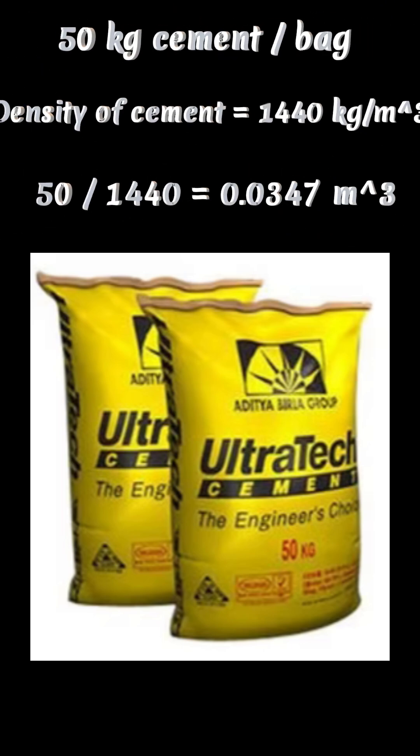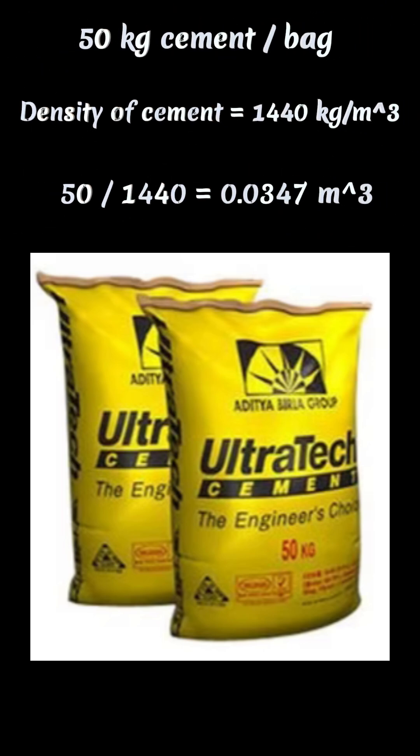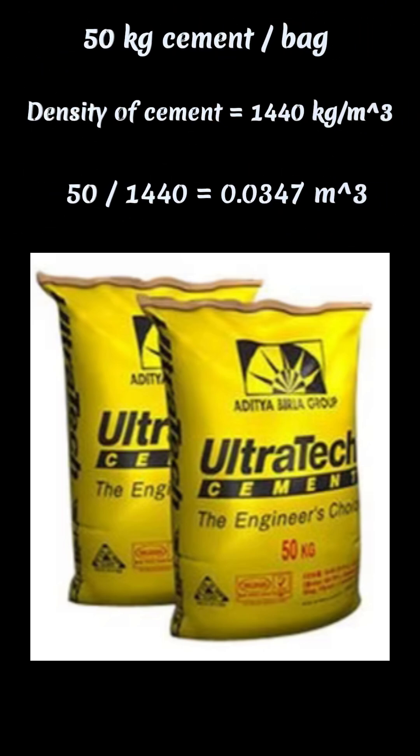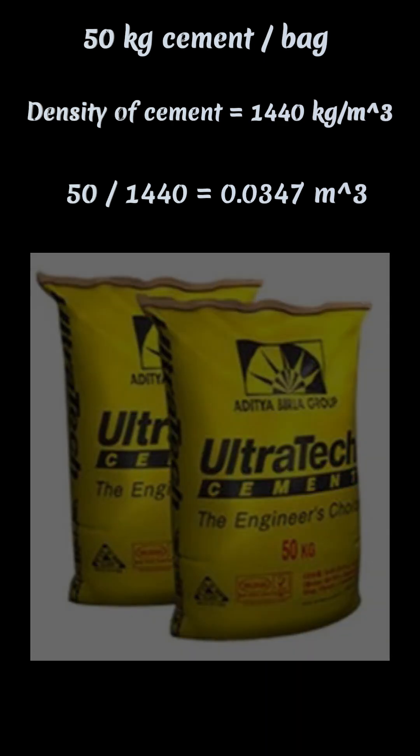So, to find out the volume of one bag of cement, we divide the weight of cement — 50 kg — by the density of cement, 1440. We get the volume as 0.0347 meter cube.